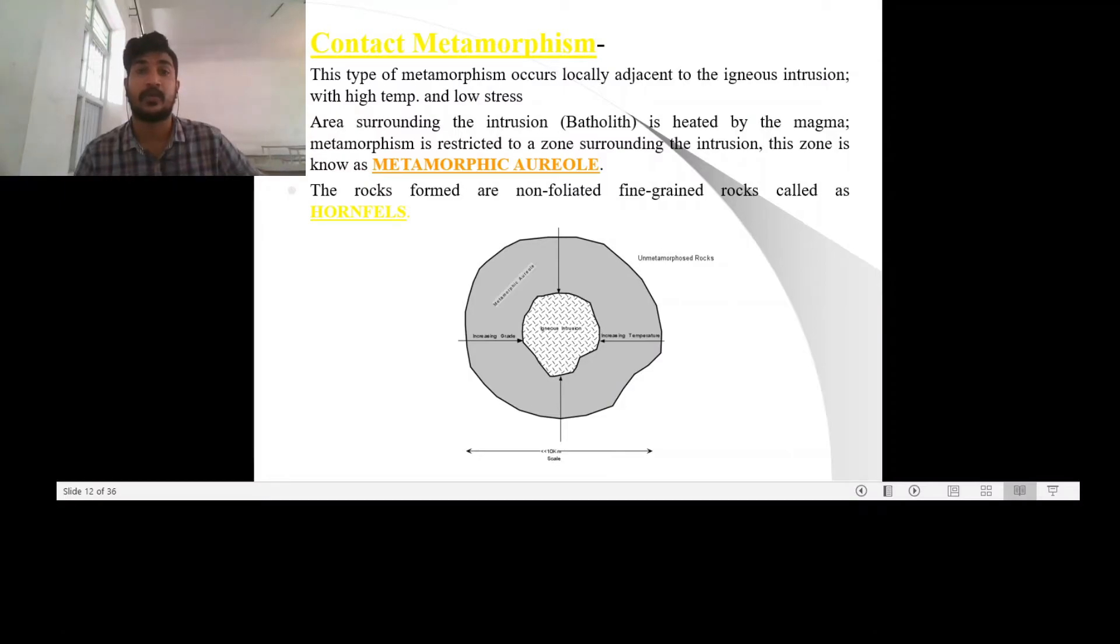And when the intrusion occurs, the intrusion penetrates into a carbonate rock, such as a limestone or a dolostone. Then the carbonate reacts with the silica from the intrusion to form a skarn deposit. And there occur many lime bearing silicate deposits will be formed in such a scenario.